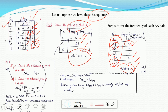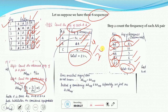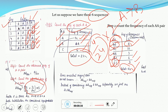Next, we calculate the expected frequency of each amino acid pair. For AB, the expected frequency uses the formula: 2 × (frequency of A) × (frequency of B) = 2 × (14/24) × (4/24). We multiply by 2 because, as in the PAM matrix, mutation of A to B is considered equally probable to B to A — both substitutions are equally probable.